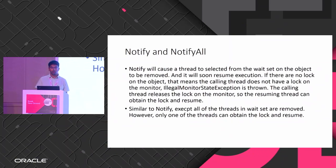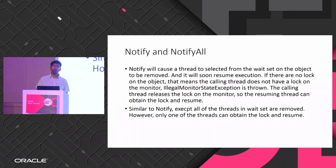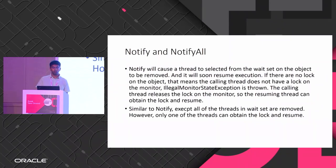The monitor maintains a count of the number of times a lock has been called from different threads. Each object maintains this variable — if it's set to zero, there is no lock on the object. It has to be one or more, otherwise it will throw an exception.